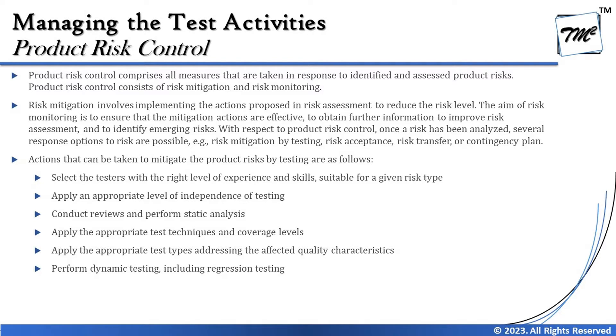With respect to product risk control, once risk has been analyzed, several response options are possible: risk mitigation by testing, risk acceptance, risk transfer, or contingency plan. Mitigation means you have action items and can act on them. Acceptance means you understand the risk but cannot do anything about it — like an act of God such as thunder or a severe storm. You accept it because there is no way to mitigate it.